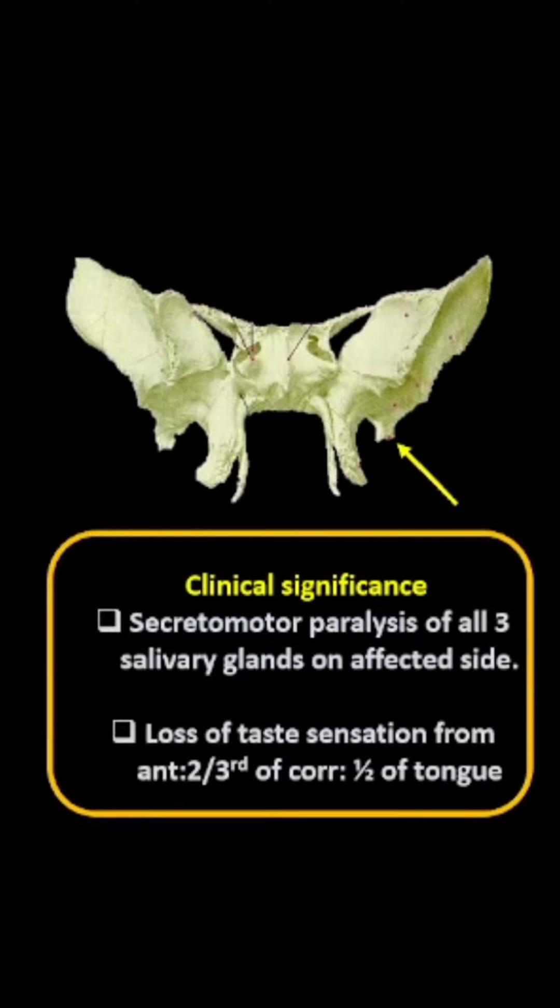And also the taste sensation from the anterior two-thirds of the tongue is carried by the chorda tympani nerve. So if there is a fracture of the spine of sphenoid, the chorda tympani nerve is also injured that can lead to loss of taste sensation from the anterior two-thirds of corresponding half of tongue.